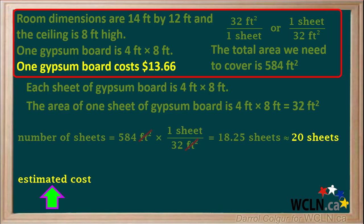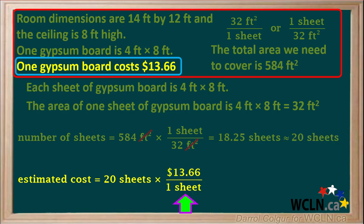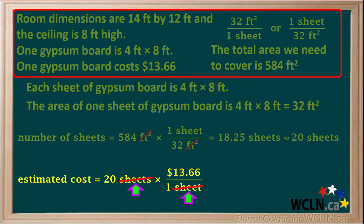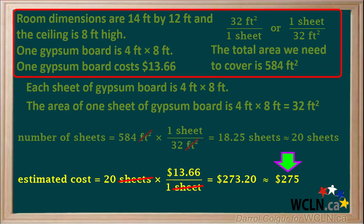Our last step is to estimate the cost of the gypsum board. We take 20 sheets and multiply by the conversion factor $13.66 per one sheet. The unit sheets cancels, leaving us with dollars as our final unit. 20 times $13.66 works out to $273.20, which we'll round to approximately $275.